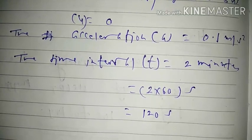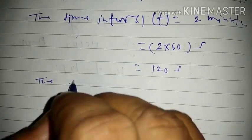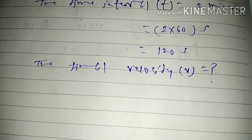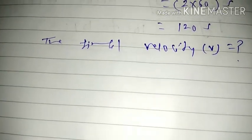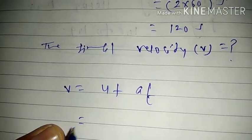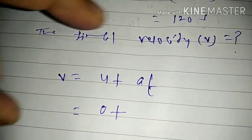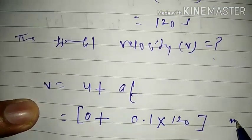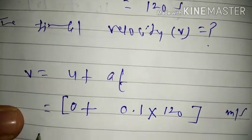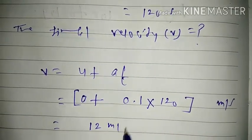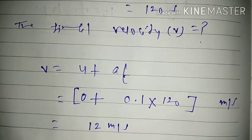Now we find the speed acquired, that is the final velocity v. Applying the equation v = u + at, putting in values: u = 0, a = 0.1, t = 120 seconds. This gives v = 0.1 × 120 = 12 meter per second. So the final velocity of the bus is 12 meter per second.